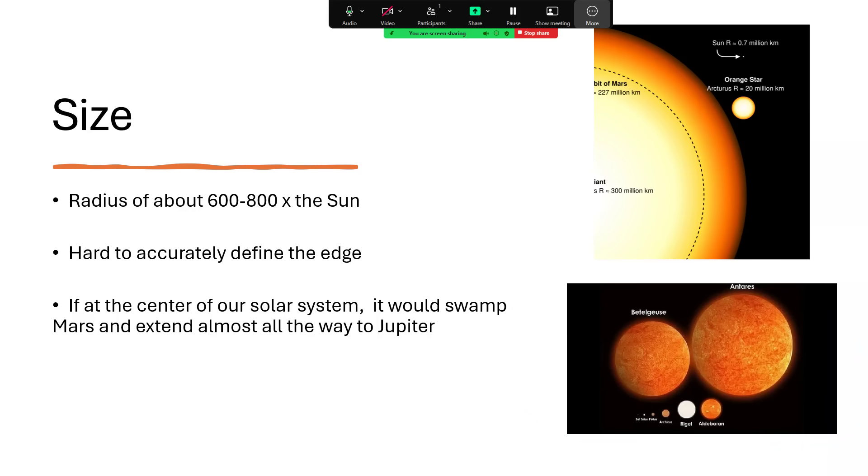I've heard it said that the outer layers of these red supergiants are essentially a red hot vacuum and just thin out almost to nothing as you go further away. So it's not possible really to quite pin down the edge.